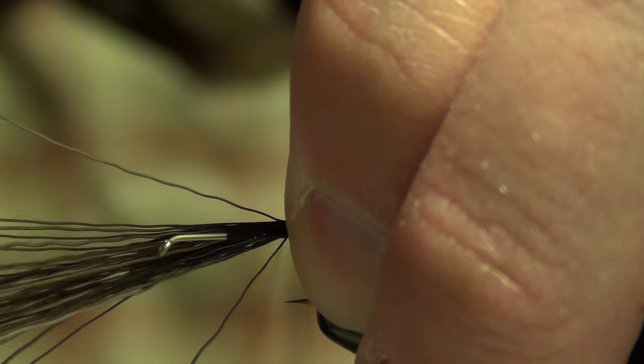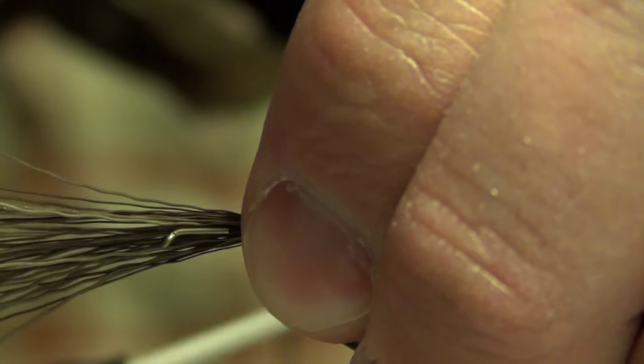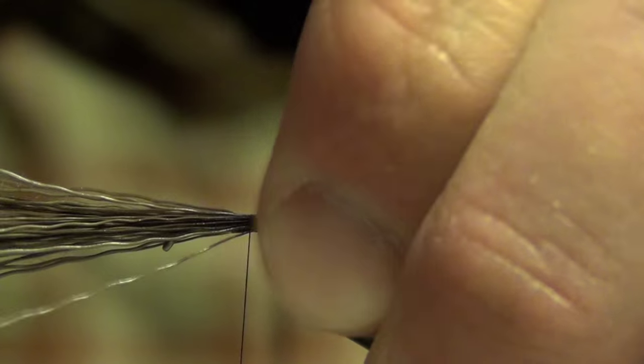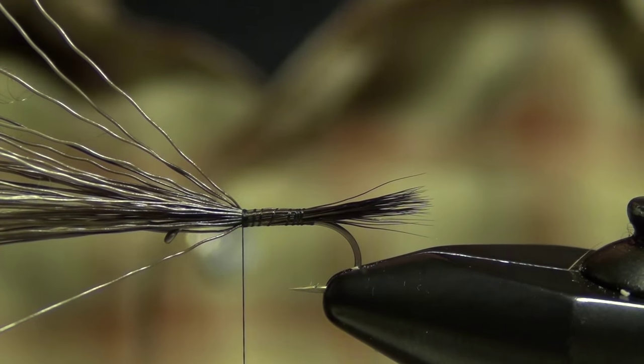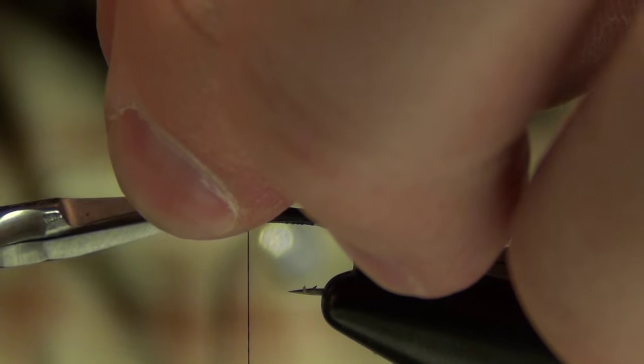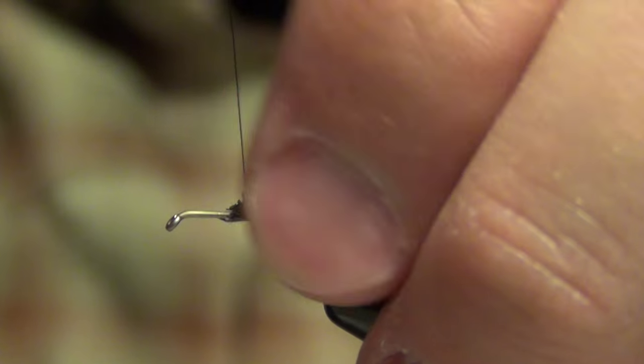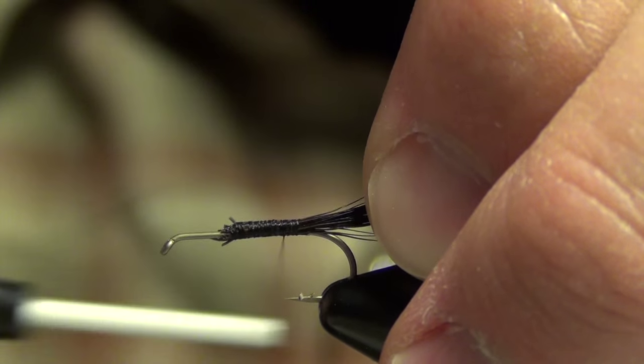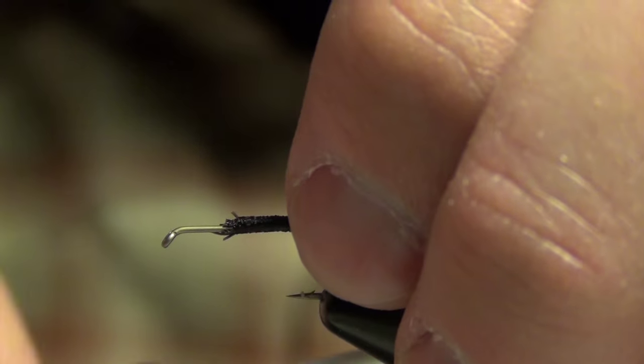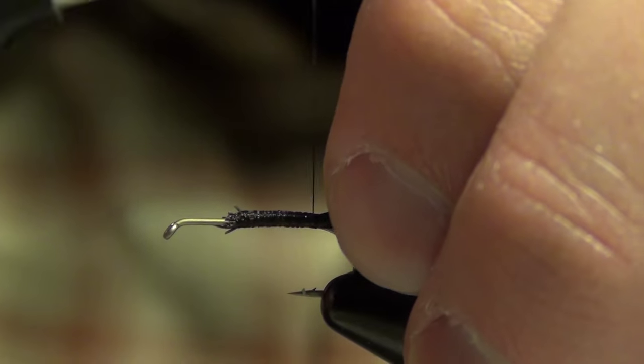I'm going to use just a loose wrap of thread, and then I can bite down once I get two wraps on there. Then I'm just going to spiral my thread forward until I get to that point where I tied it in. I can trim off the excess, clean up those butt ends, wrap back down the body to make sure everything's nice, smooth, and secure. Then wrap my tail all the way back to the bend of the hook.